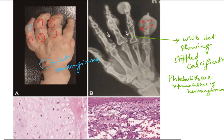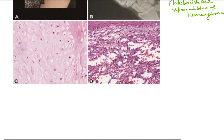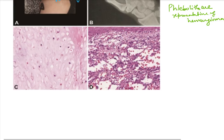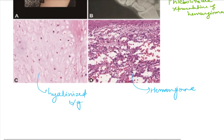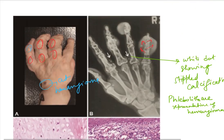Here the vessel has got calcified — a calcified vein. We can clearly see a hyaline background on histology, and here we can see the picture of hemangioma. This clinical picture defines Maffucci syndrome.